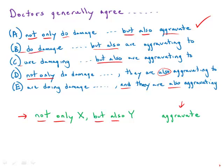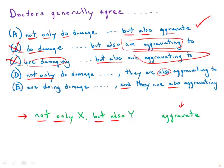B, we have active, do damage and then passive are aggravating too. C, we have passive and passive. So both of those are out. D, we have do damage and passive are aggravating. So that's out.